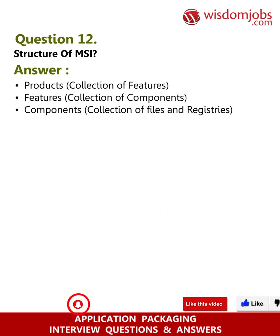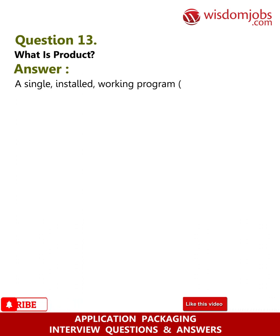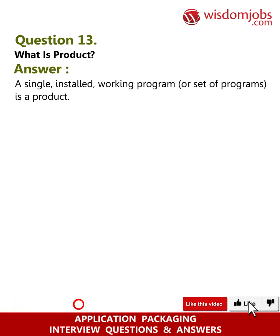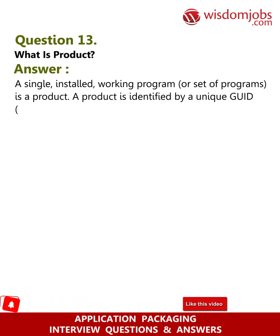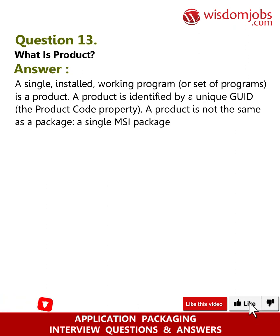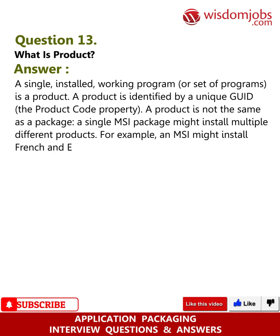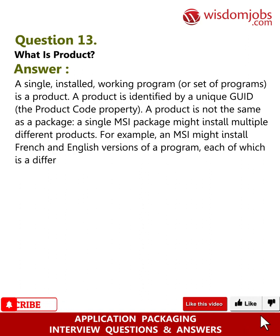Question 13: What is a product? Answer: A single installed working program or set of programs is a product. The product is identified by a unique GUID — the product code property. The product is not the same as a package. A single MSI package might install multiple different products. For example, an MSI might install French and English versions of a program, each of which is a different product.